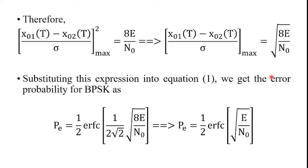Substituting this maximum value into equation 1 — the error probability expression — we get the error probability of the binary phase shift keying signal as: Pe = (1/2) erfc[1/(2√2) · √(8E/N0)]. Simplifying the term inside the bracket, the error probability of BPSK with matched filter receiver is: Pe = (1/2) erfc(√(E/N0)), where E is the energy of the signal and N0 is the power spectral density of the noise.